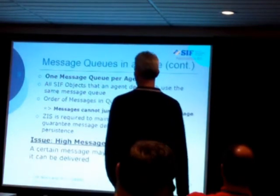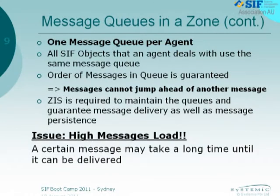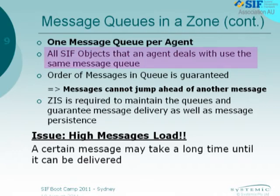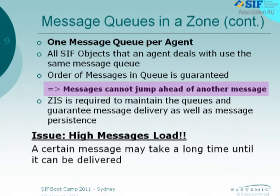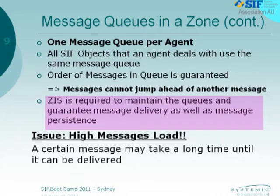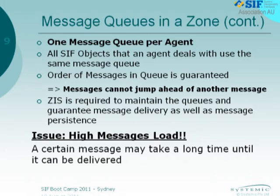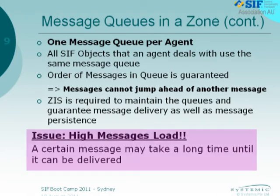So that summarizes, to a good extent, what I've just said. One message queue per agent — important — because all objects use the same queue that an agent deals with. Order of messages in a queue is guaranteed, which means messages cannot jump ahead of another message and you cannot prioritize them. This is required to maintain the queues and guarantee delivery in the order messages are received. That explains the message load problem: you can't jump the queue.